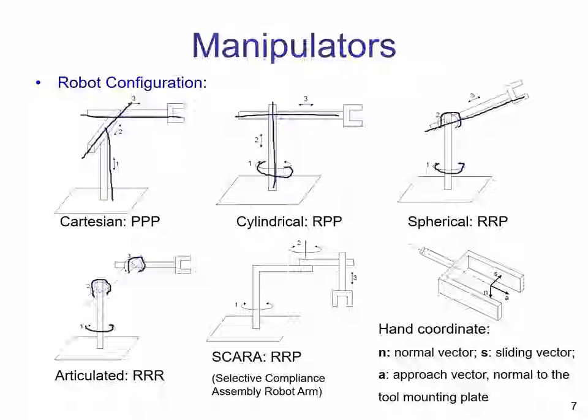We have another type here, which is the SCARA type. SCARA is a very commonly used robot for pick-and-place tasks. We have a revolute joint here, with a link which is not straight — there is some angle here — it's a rigid body. We have another revolute joint and a prismatic joint going up and down. SCARA stands for Selective Compliance Assembly Robot Arm, and it is very commonly used in several manufacturing processes.